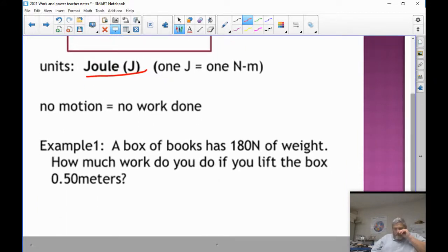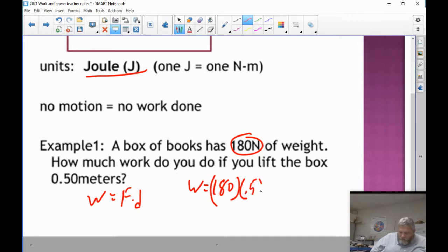So box of books has 180 newtons of weight. How much work do you do if you lift the box half a meter? So work equals FD. The force is 180 newtons because if it weighs 180 newtons, if you have to lift it, you're going to apply 180 newtons. So work equals 180 times the distance, which is 0.5. And that's going to be 90 joules of work.